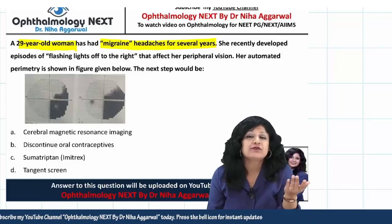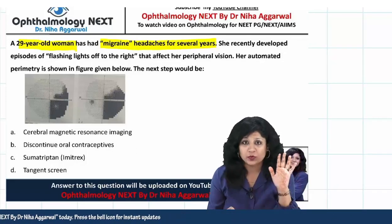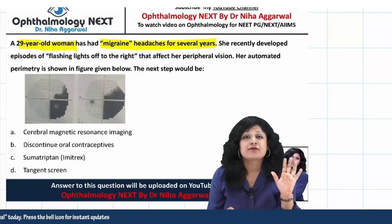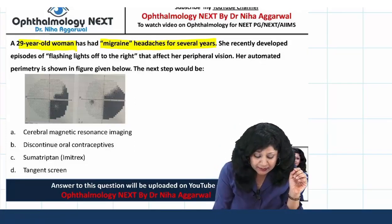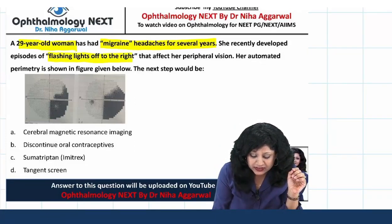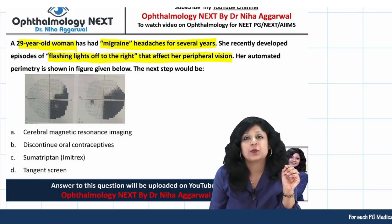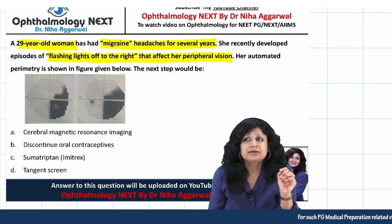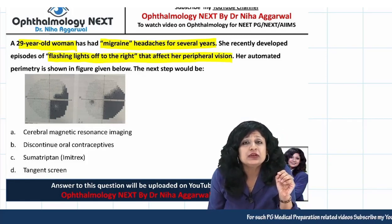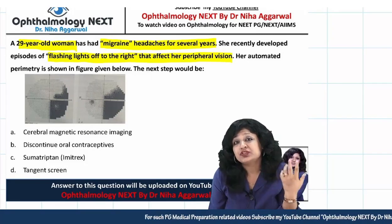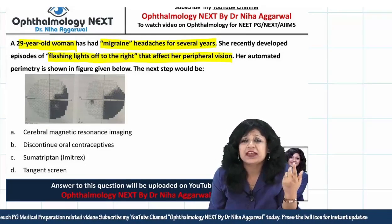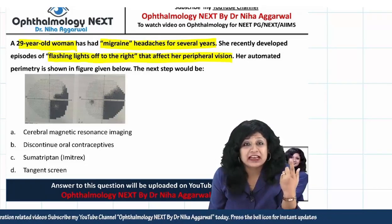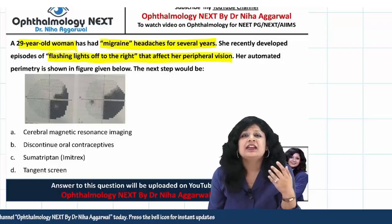Don't take it for 100% that this is migraine only before confirming. Now she recently developed flashing lights towards the right that also affects her peripheral vision. Do you believe that vision would be affected in cases of migraine? Will you get the flashing lights in cases of migraine?